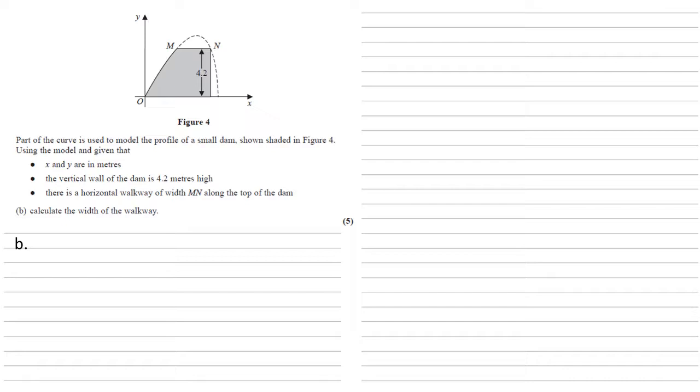We know that the y-coordinate of the line MN, the walkway, is 4.2. If we can work out the x-coordinates that go with that, we can work out the width. So we know that our y is 5 sine 2t, so we'll set that equal to 4.2. So sine 2t is 0.84.